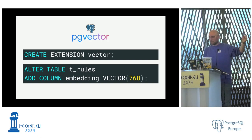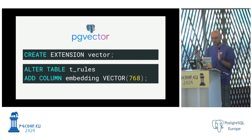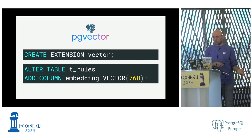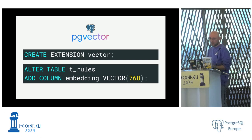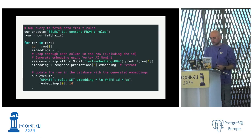Here for example I'm adding a new column in my table t_rules using the vector data type, specifying the number of dimensions. The dimension is the number of floats in the array. The more dimensions you have, the more precise the embedding — but the bigger your vectors are, making them more complex to store and load into memory. It's a trade-off.